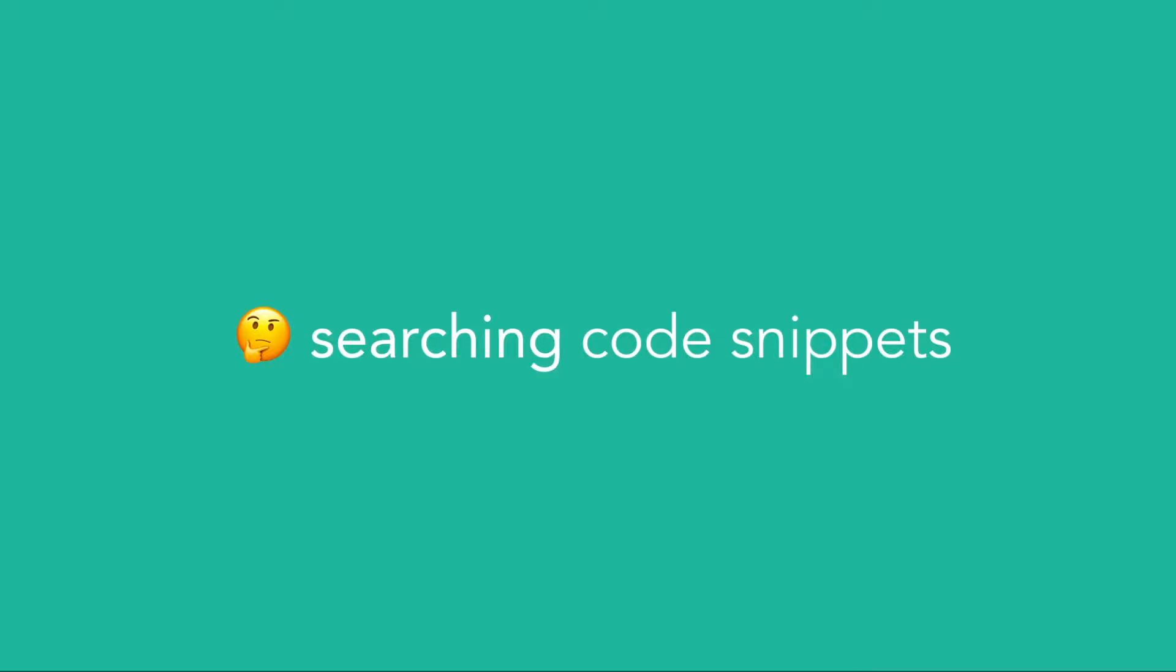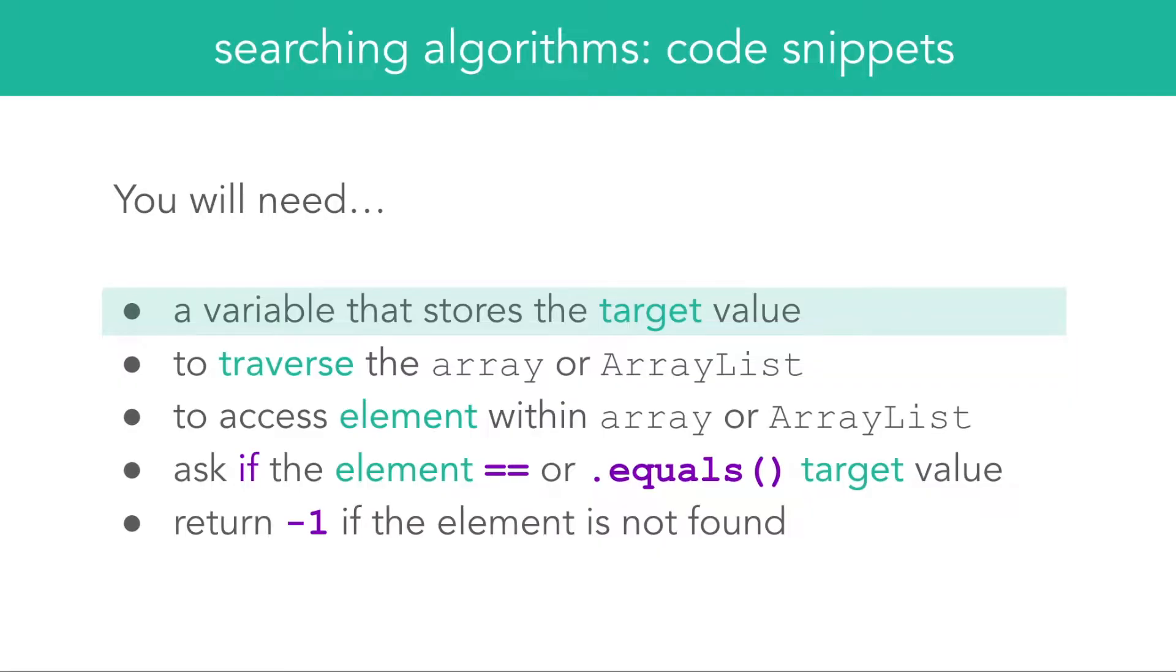When searching for specific elements in an array or array list, what might you see in a searching algorithm? You will need a variable that stores the target value. You will need to traverse the array or array list.